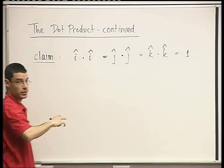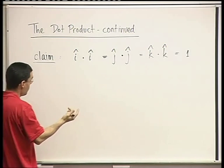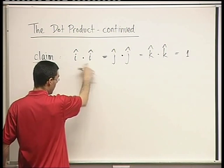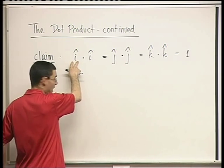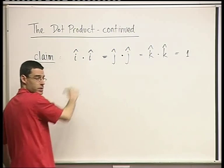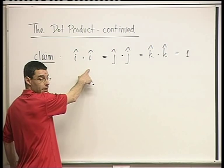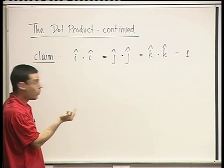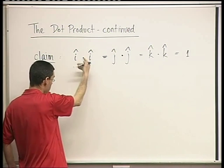Remember that a dot product of two vectors is a scalar product — the result is a scalar. Why is this true? Because the dot product of two vectors is the length of one times the length of the other times cosine of the angle between them. The angle between a vector and itself is zero, cosine of zero is one, and the length of a unit vector is one.